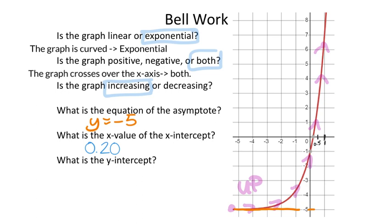Of course, that would be an ordered pair if it had asked for it. So this point would be the ordered pair (0.2, 0)—the y-value for all x-intercepts is 0.